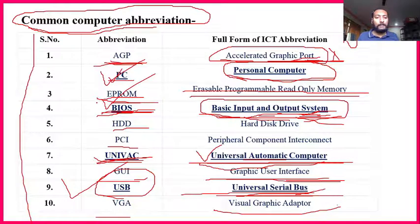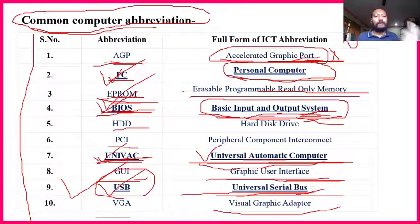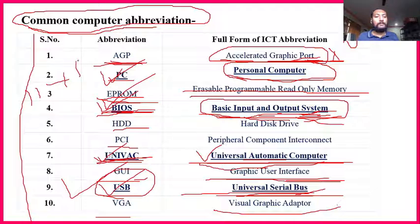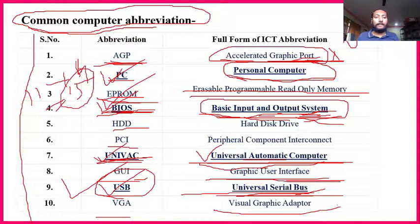So from this slide: PC is important (1), BIOS is important (2), UNIVAC is important (3), USB is important (4) — four are important here. So total: 11 plus 4 equals 15 important abbreviations till here.